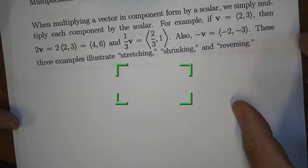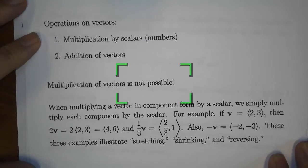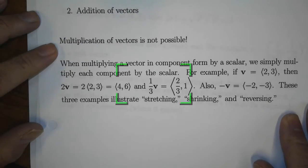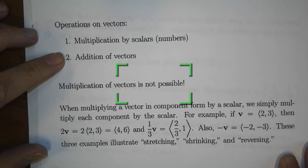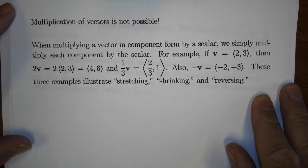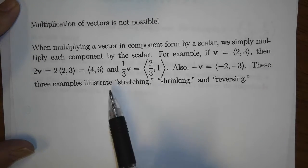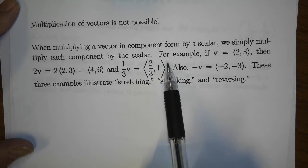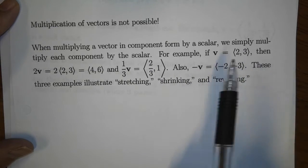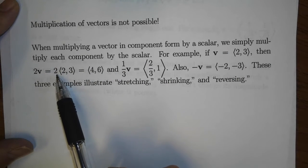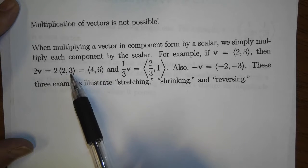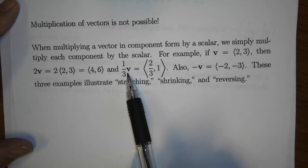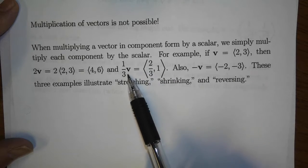We can perform basic operations on vectors: we can multiply vectors by scalars and we can add vectors together, but we cannot multiply vectors by each other. For scalar multiplication, when multiplying a vector in component form by a scalar, we simply multiply each component by the scalar. For example, taking the vector ⟨2, 3⟩ and multiplying by the scalar 2 gives ⟨4, 6⟩. Multiplying by 1/3 gives ⟨2/3, 1⟩.